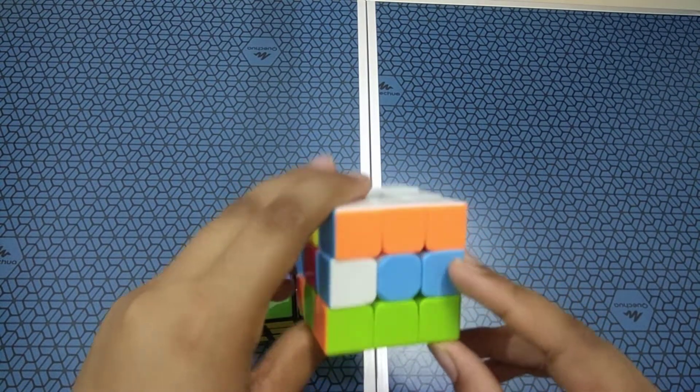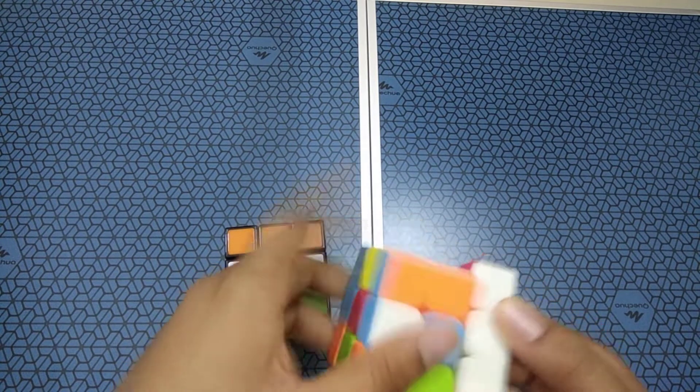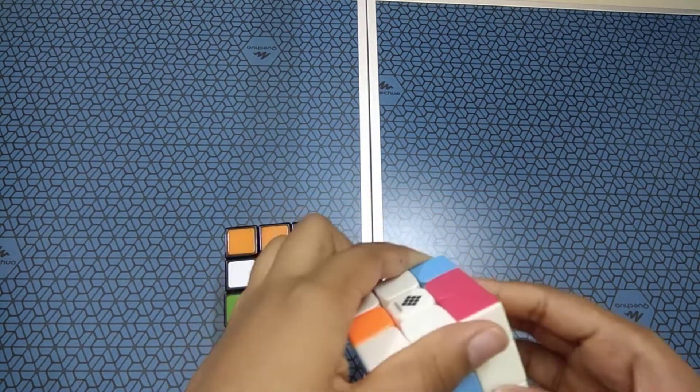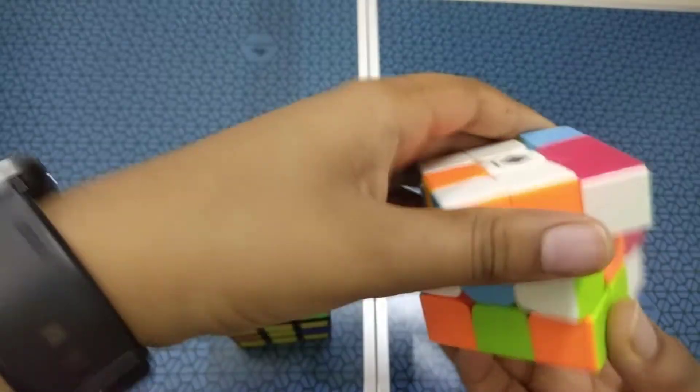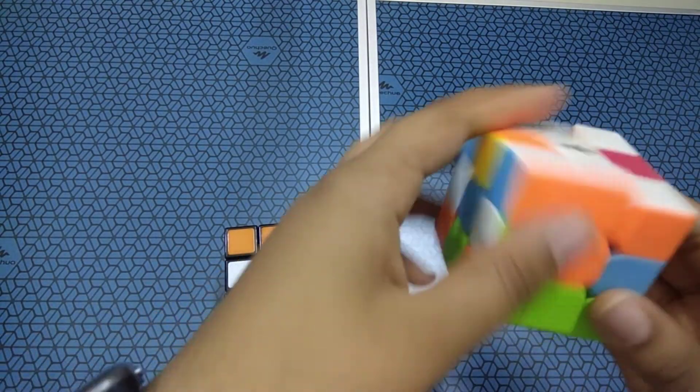Now again, we have to bring one more white here. So for that, what you have to do is this right layer, just turn it down. And this second layer, just turn this. That's it. Once you're done, just turn this up.